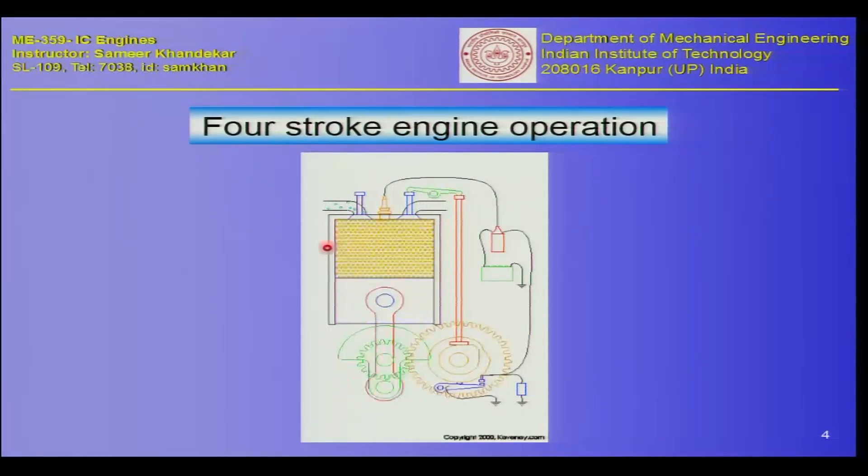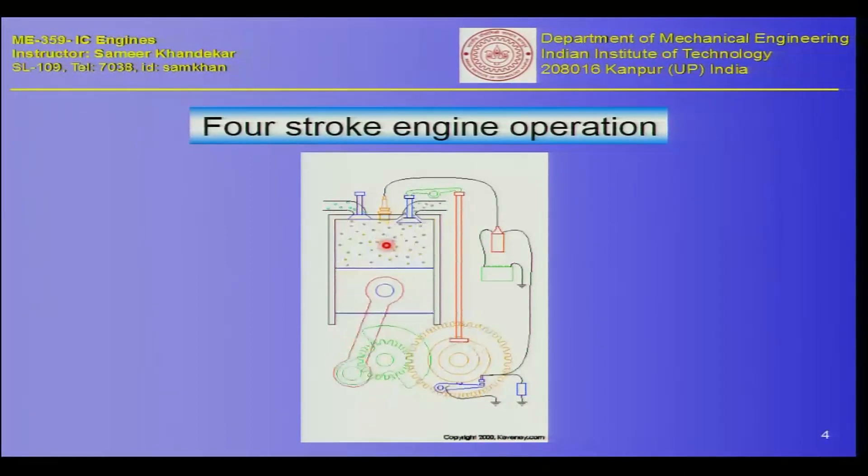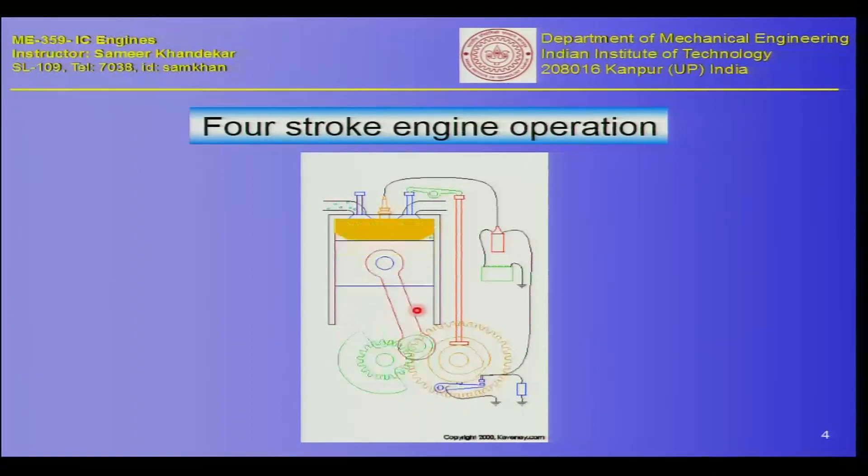Depending on whether it is a two-stroke or four-stroke engine, there are differences in construction and in peripheral requirements — cooling devices, pressure vessel wall thickness due to higher pressures, and vibrations transmitted to the engine foundation. We will also study the advantages and disadvantages of completing four thermodynamic processes in two strokes versus four distinct strokes, including differences in fuel type, exhaust characteristics, and efficiency.